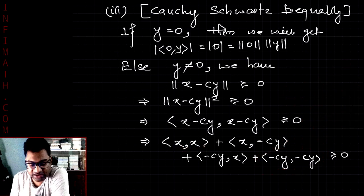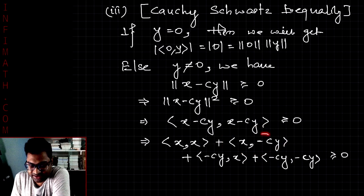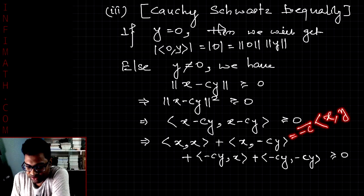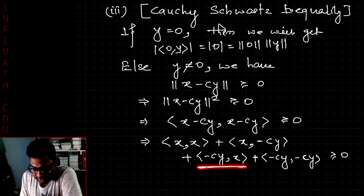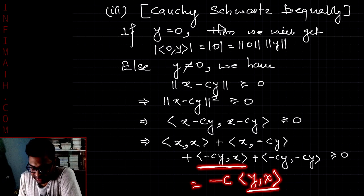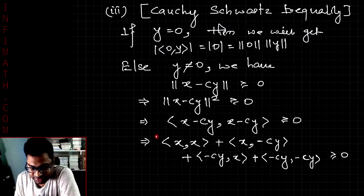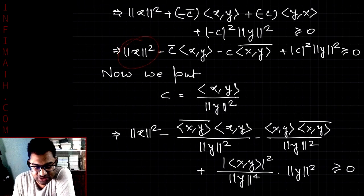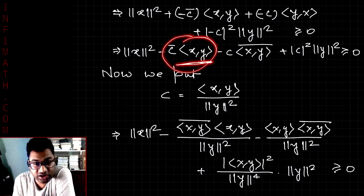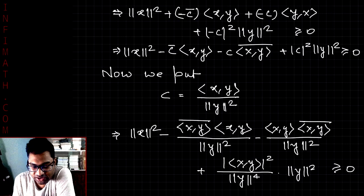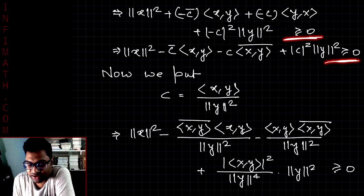Looking at the middle terms: ⟨x, −cy⟩ = −c̄·⟨x, y⟩, and ⟨−cy, x⟩ = −c·⟨y, x⟩. Since ⟨y, x⟩ = ⟨x, y⟩ conjugate, this becomes −c·⟨x, y⟩ conjugate. So the full expansion gives: norm of x squared − c̄·⟨x, y⟩ − c·⟨x, y⟩ conjugate + |c|²·norm of y squared ≥ 0.